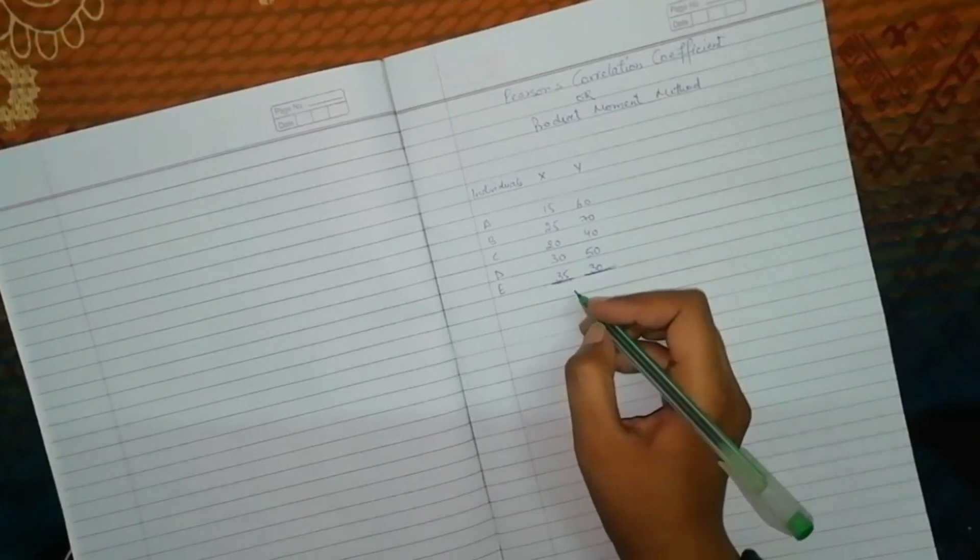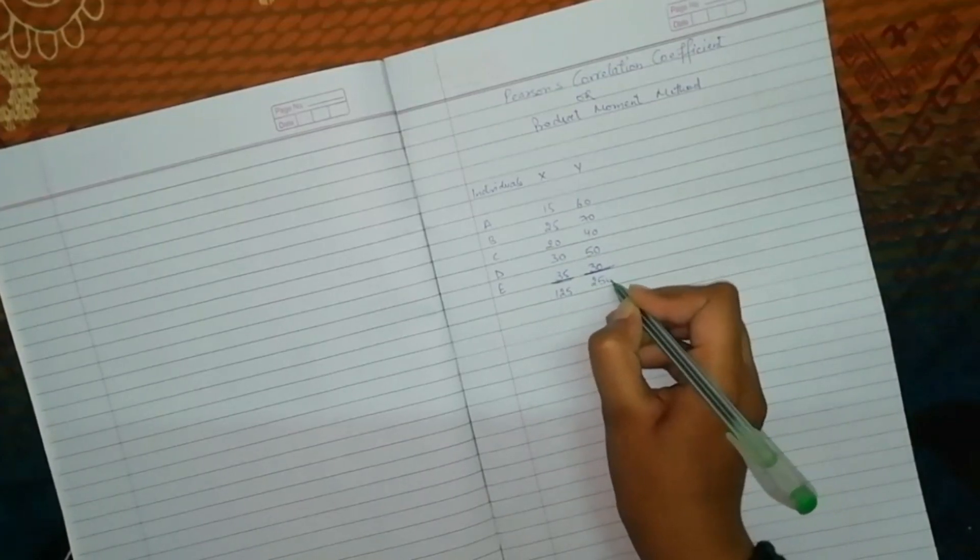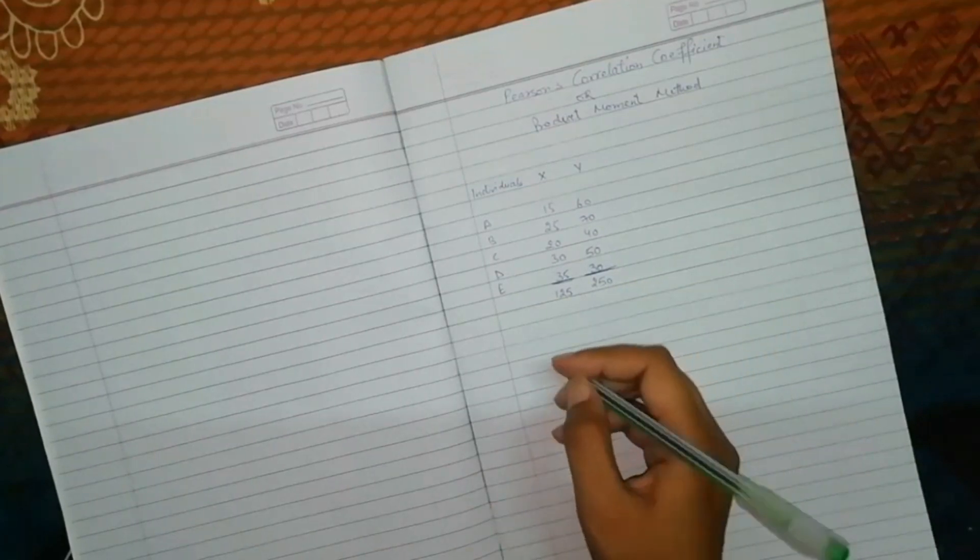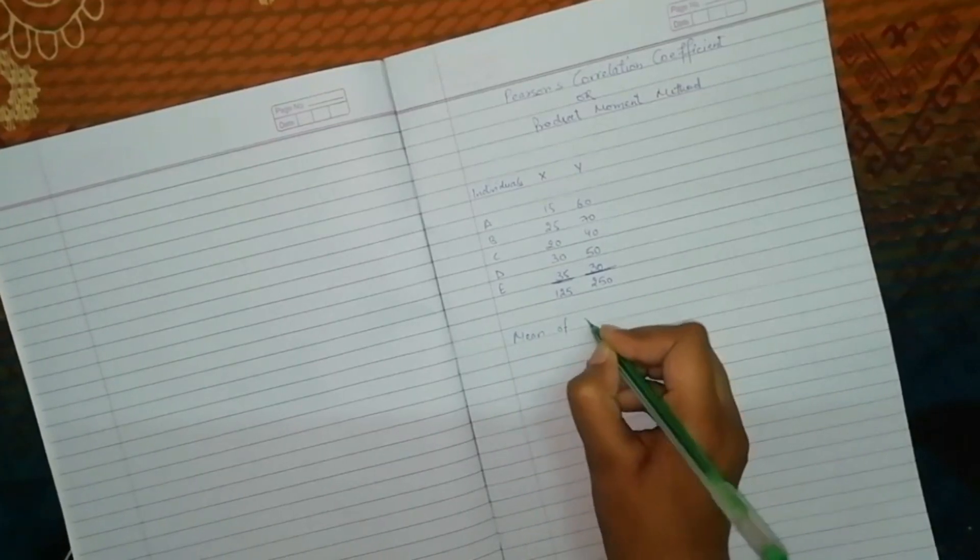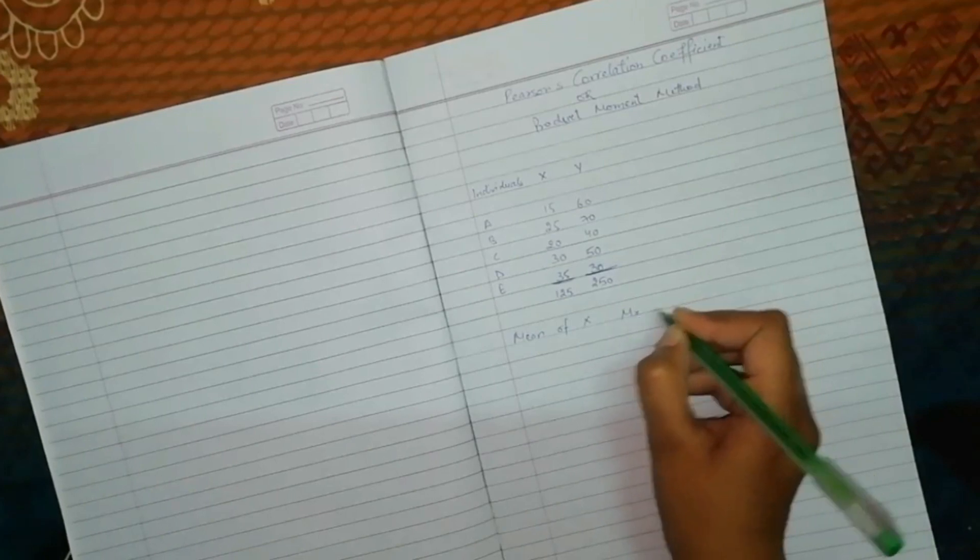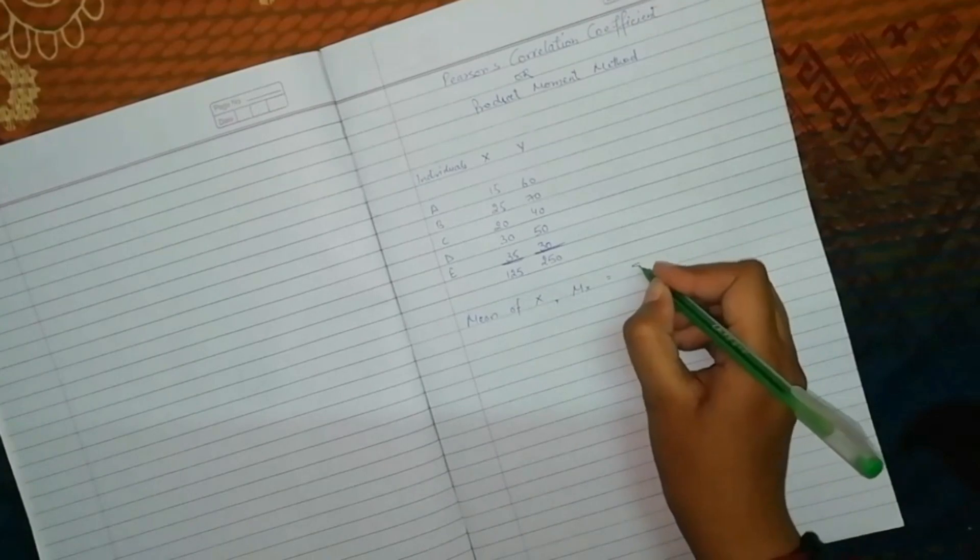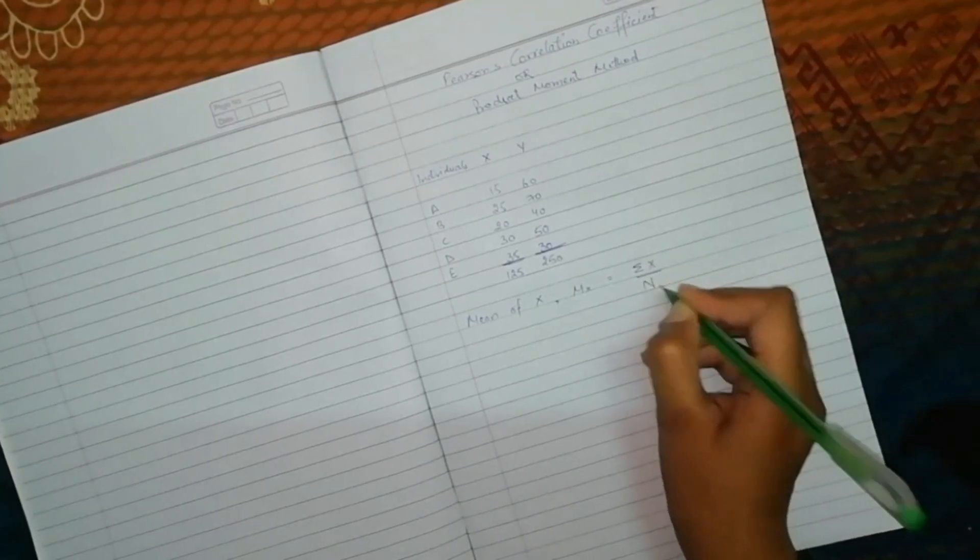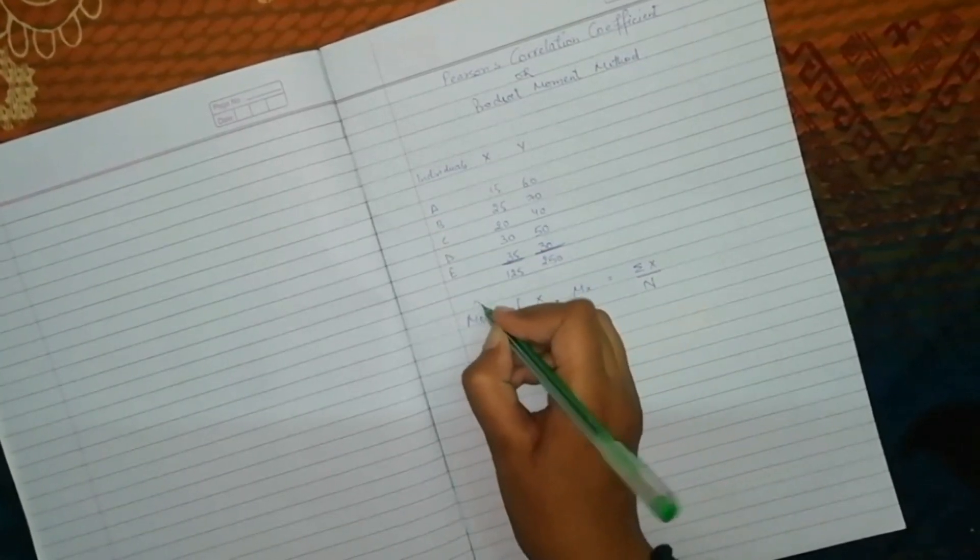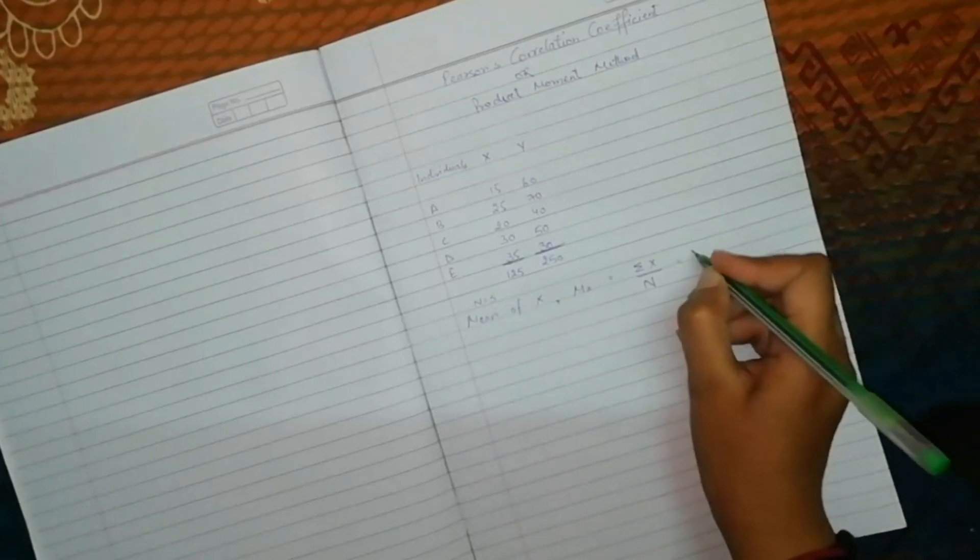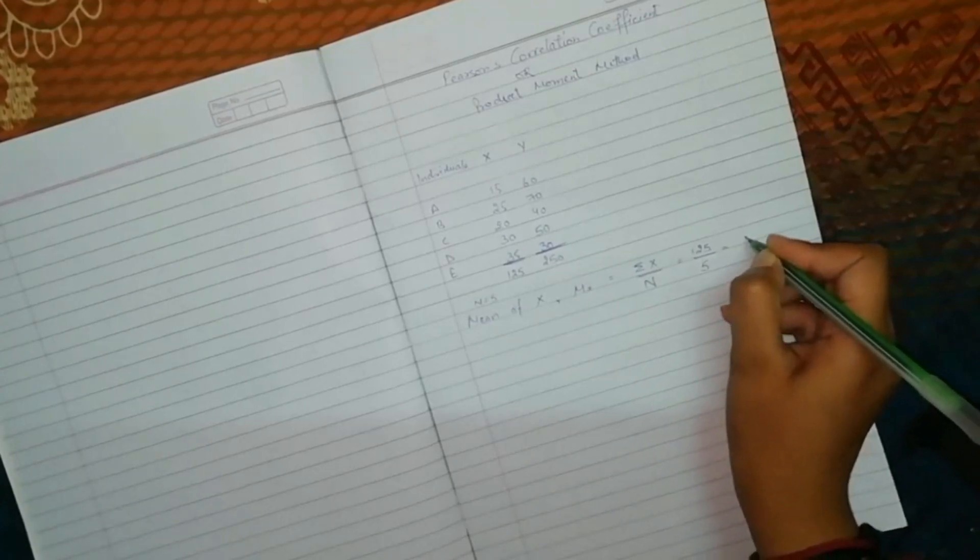So, add this and the answer is 125 and it will be 250. Then, you have to calculate mean. Mean of X, which you can see mean of X. So, how do you calculate this? Sum of X upon N. Now, there is N. These are 5 numbers. N is 5. So, this mean will be 125 divided by 5, which is 25.